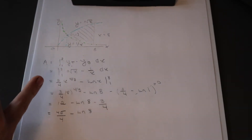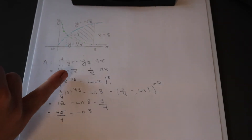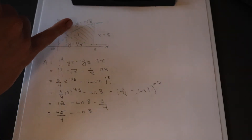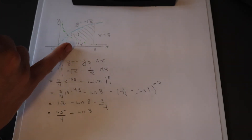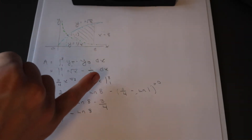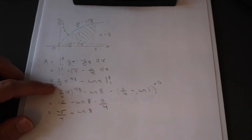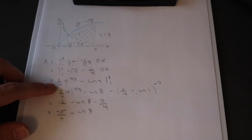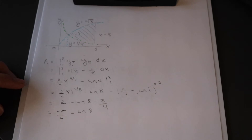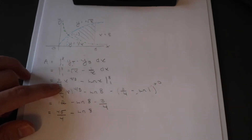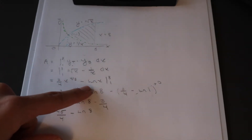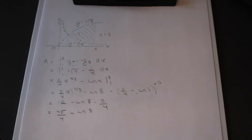We rewrite our integration from 1 to 8. The top function is the cube root of x, minus 1/x, which is the bottom function. Make sure you include dx because we're integrating. Then you set up the next step and integrate both functions. The integral of 1/x is ln(x), and you place your bounds at the end, meaning you'll plug those values into both functions.